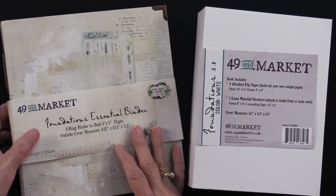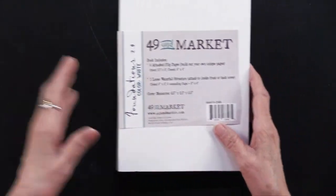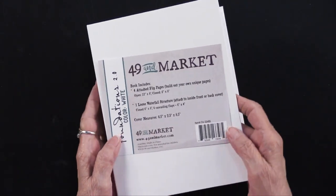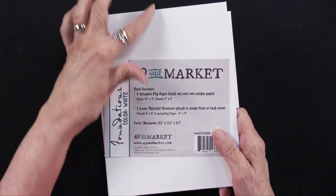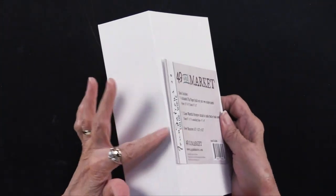And let me just walk you through what you get. So this is the white one. And the cover measures 6 1⁄2 by 8 1⁄2, and it's 2 1⁄2 inches thick.